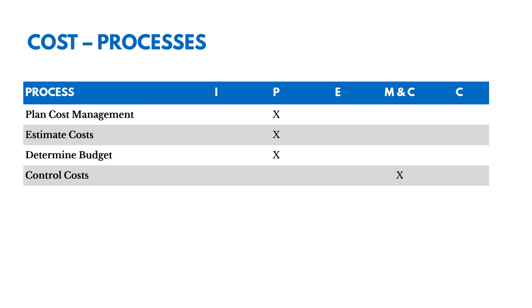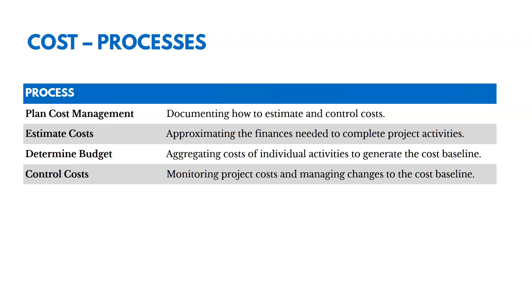As a reminder, there are four processes here: plan cost management, estimate costs, determine budget, and control costs. Three are in planning and one is in monitoring and controlling.